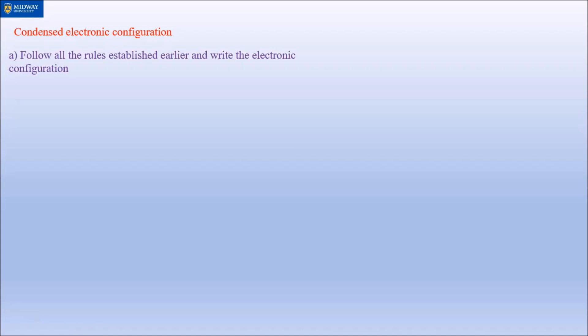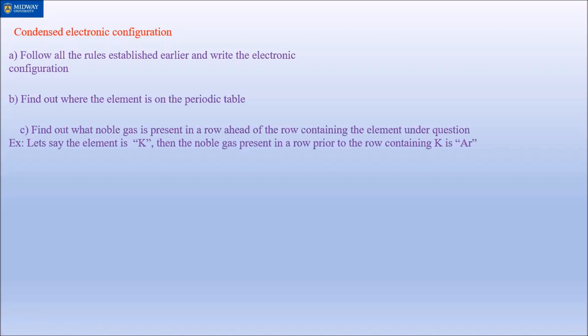When you write an electronic configuration, you've got to figure out where the element is, which domain it belongs to. So the rules are governed by the domain it belongs to, which again leads to a redundant but important statement for this case: find out where the element is located on the periodic table. Third rule, this is a new rule: find out what noble gas is present in a row ahead of the row containing the element under question.